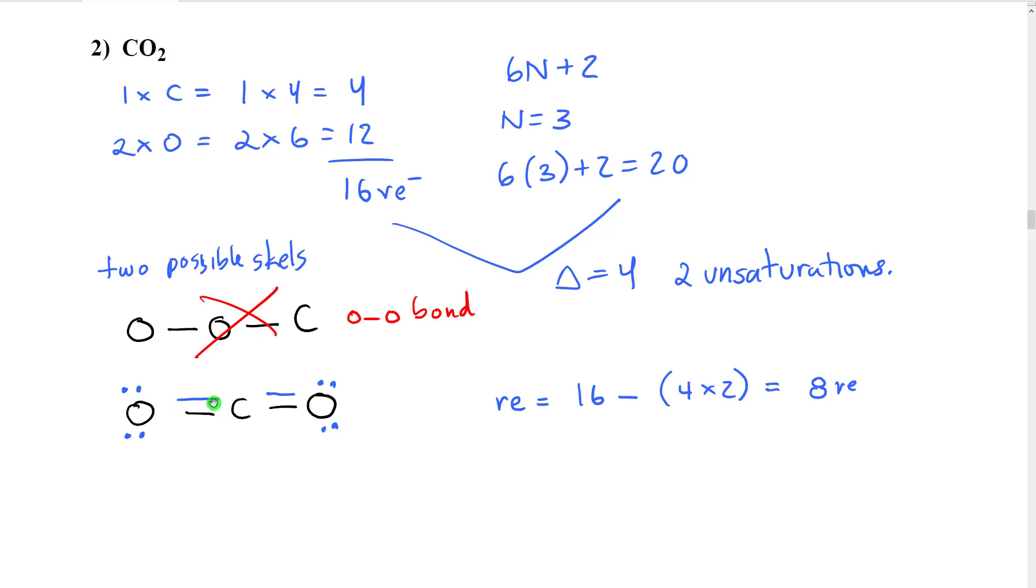So ignoring those dots, we have two, four, six, eight electrons in our structure already. So that's this. We subtract it from our total number of valence electrons. That gives us eight remaining electrons.